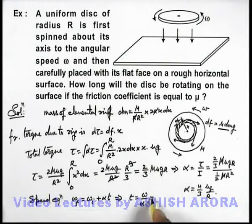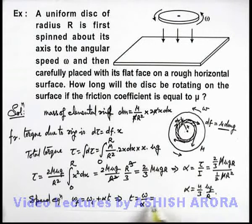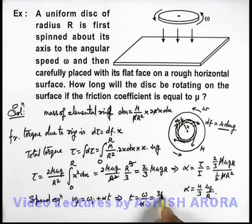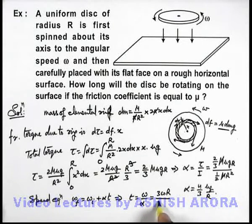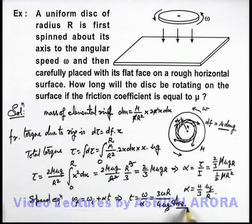If I just substitute the value of α here, it'll be 3ωR by 4μg. That'll be the answer to our problem.